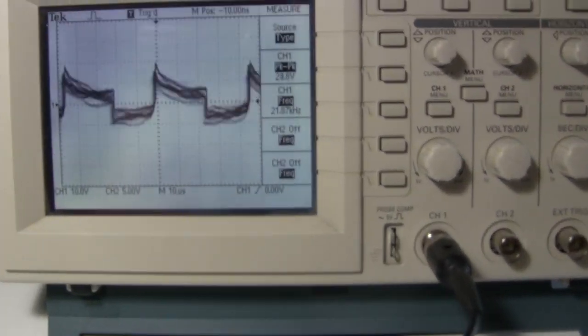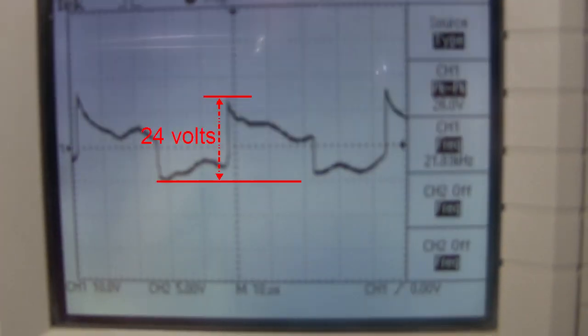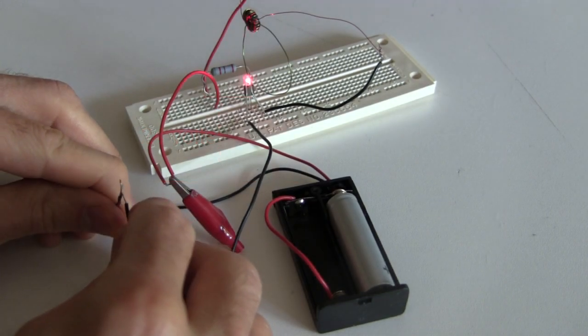Now here's what the voltage looks like on my oscilloscope when the LED is being powered through the Joule Thief circuit. Notice that at times the voltage is as high as 24 volts, enough to power the LED. So the circuit is messing with the voltage and the current from the battery in order to output enough voltage, some of the time, to light the LED.